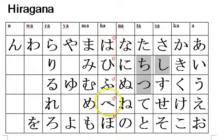Ha, hi, fu, he, ho with maru becomes pa, pi, pu, pe.